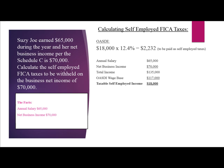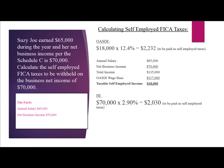Why only $18,000 for OASDI? Because there is a wage base. The annual salary is $65,000, net business income is $70,000, giving total income of $135,000. The wage base is $117,000, so the difference is $18,000. $18,000 times 12.4% equals $2,232 in self-employed OASDI taxes. The HI tax is $70,000 times 2.9%, equaling $2,030. Total self-employed FICA to be paid is $4,262.